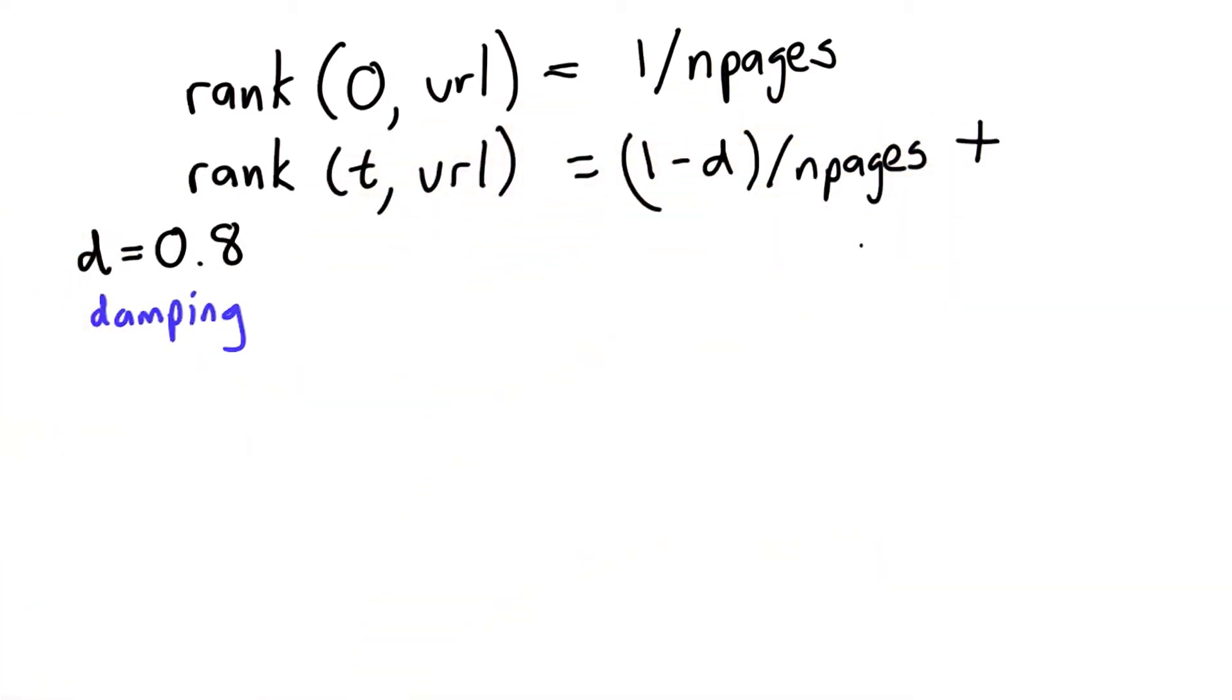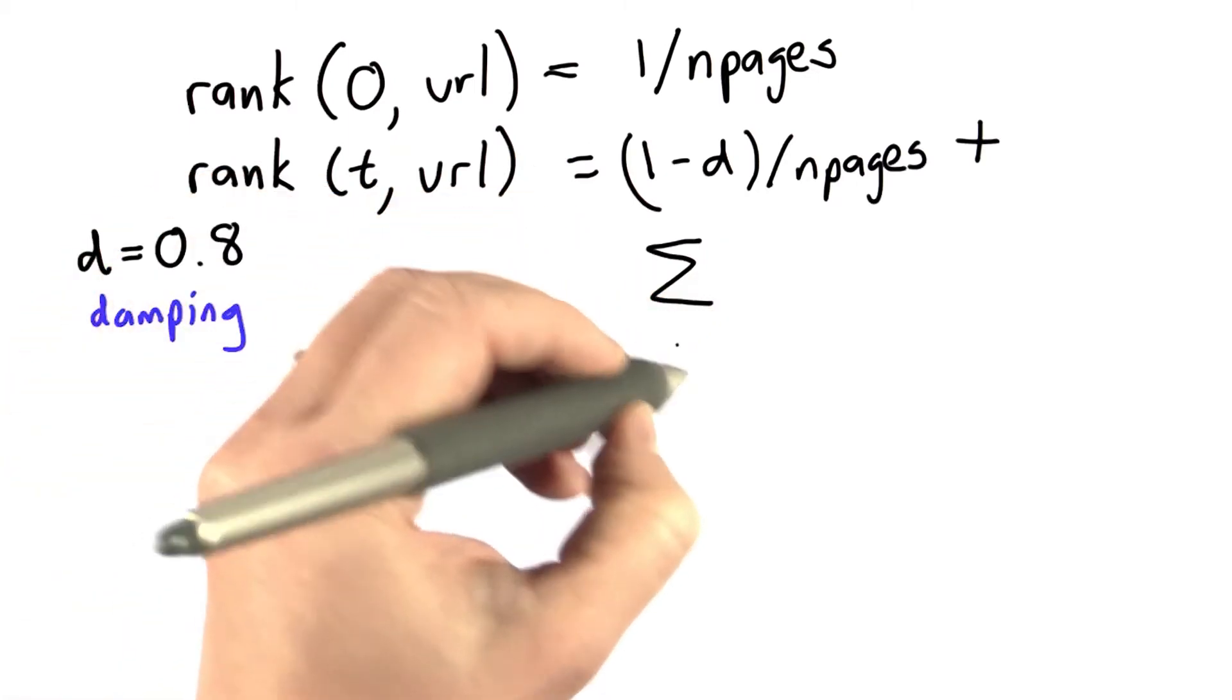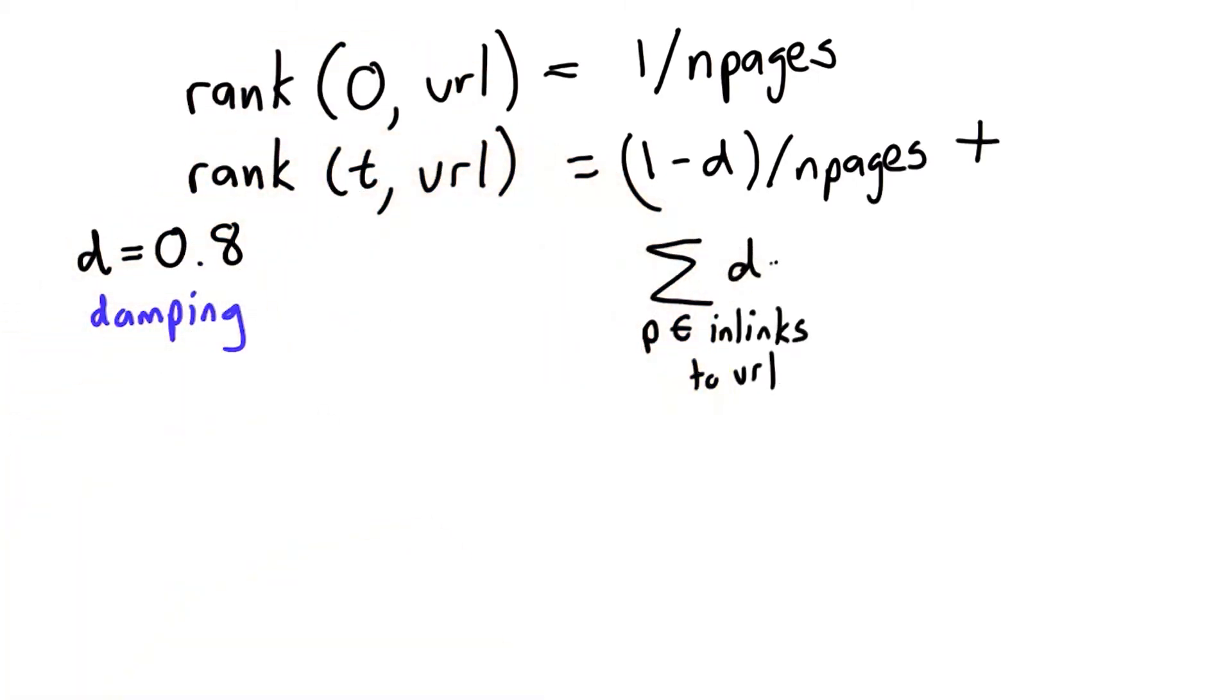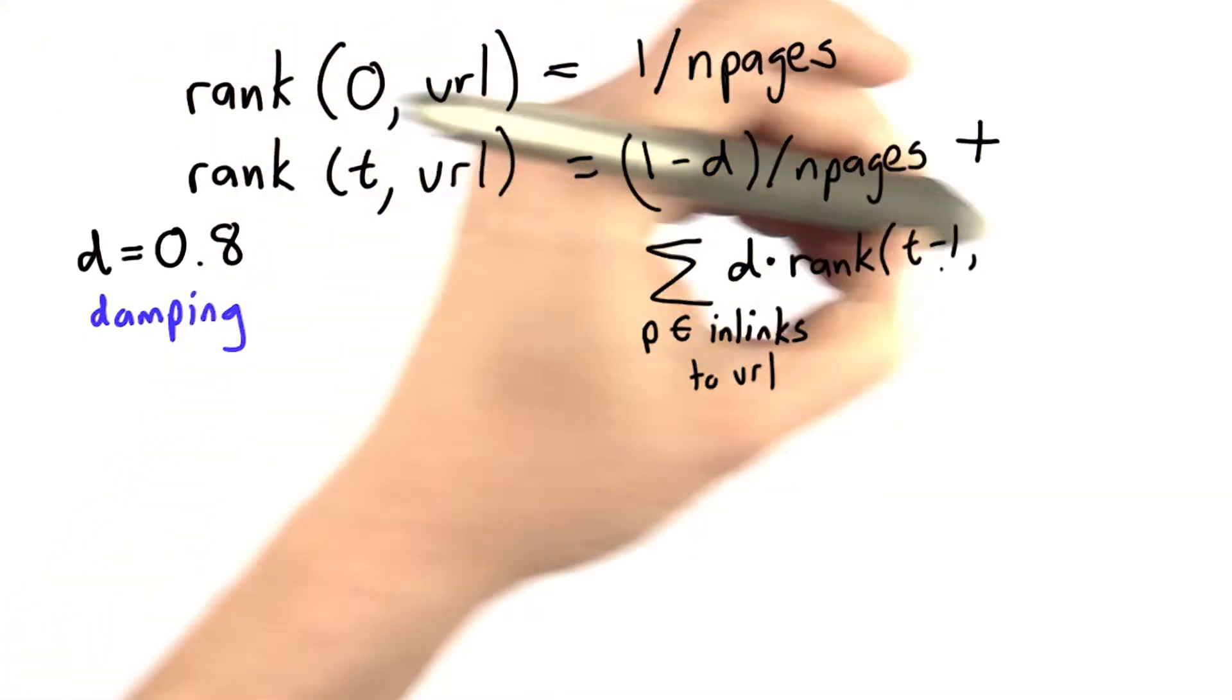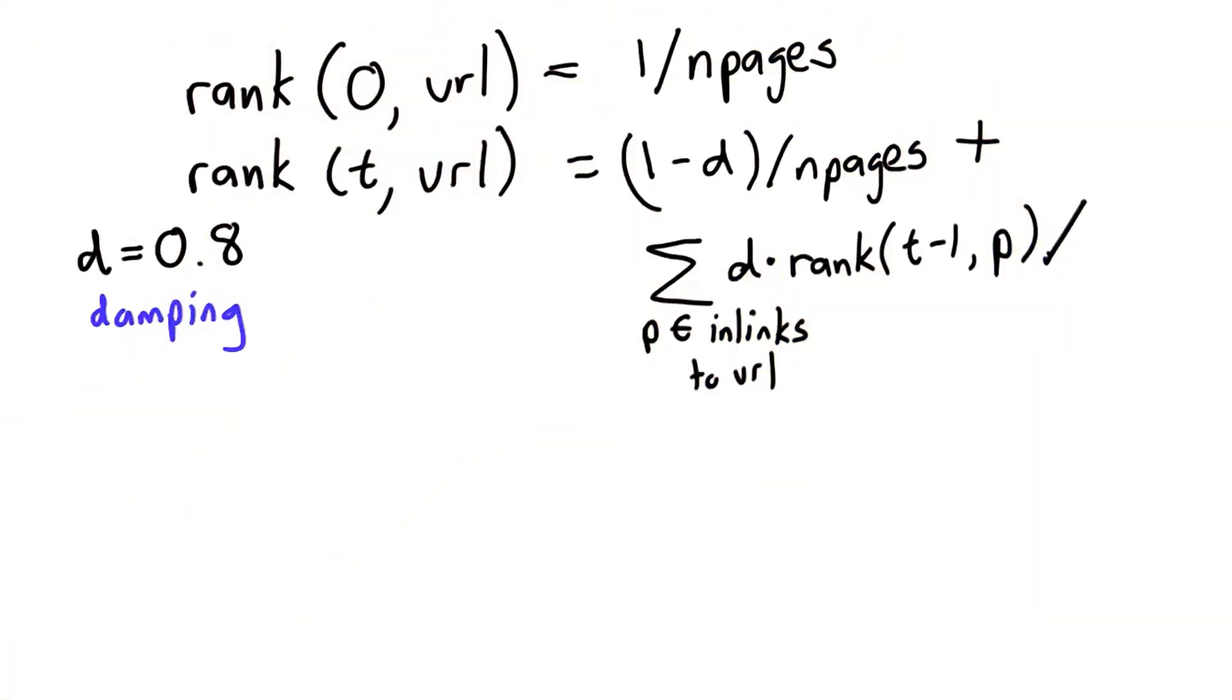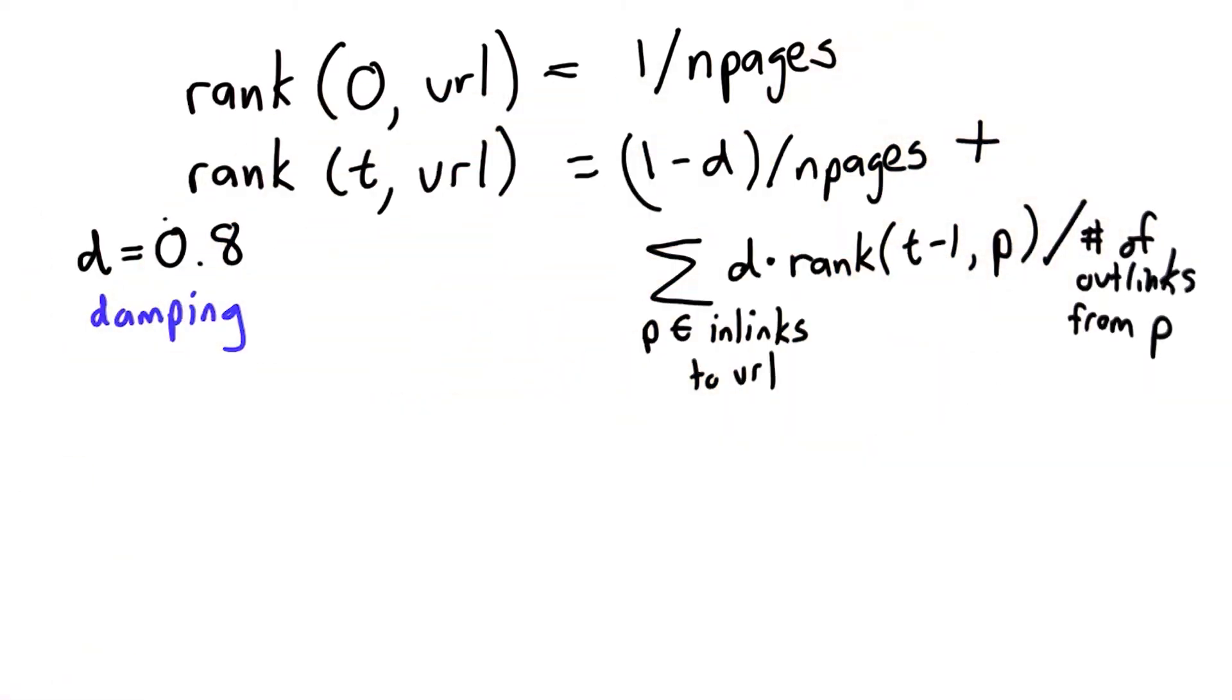We add to that the sum that we get of all the ranks, all the pages that link to this URL. We add up d times the previous iteration, so it's going to be d times rank on step t minus 1 of that page, but we want to divide that by the number of outlinks from p. So it's starting to look more like Python code. We want to simplify it a little bit before we get to Python code.